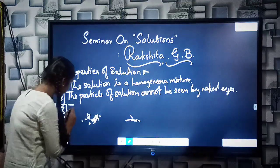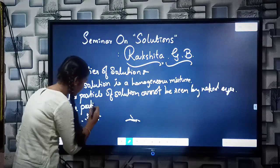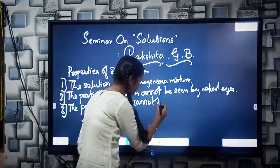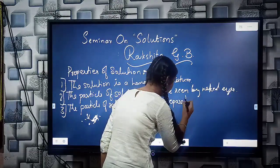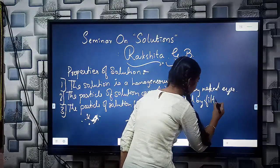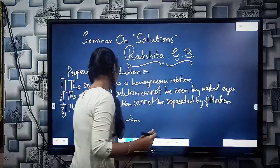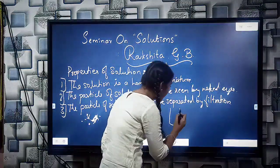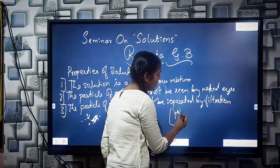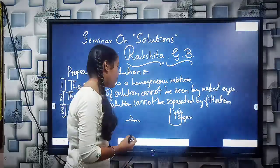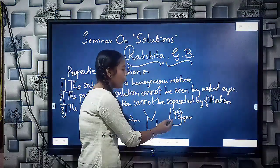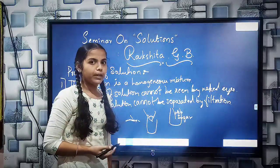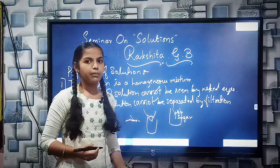The third property of the solution is that the particles of the solution cannot be separated by the filtration method. For example, if we take a beaker and put some water and sugar and dissolve it, then take a filter paper and filter this solution, we cannot get the solute particles on the outside of the filter paper. This shows that particles of the solution cannot be separated by the filtration method.